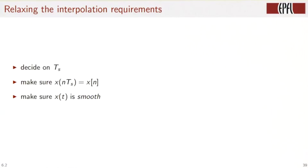We need to make sure that at that location, n TS, x of t is equal to the samples xn. And we would like x of t to have a certain smoothness, maybe not infinitely differentiable but at least some smoothness.